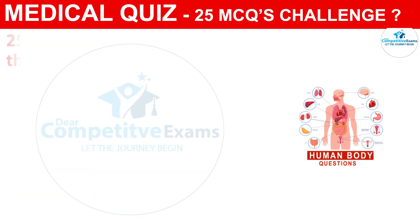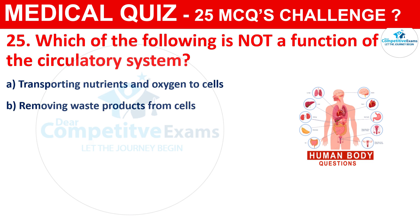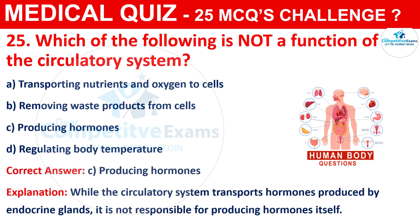Question 25: Which of the following is not a function of the circulatory system? The options are Transporting nutrients and oxygen to cells, Removing waste products from cells, Producing hormones, or Regulating body temperature. The correct answer is C, that is Producing hormones. While the circulatory system transports hormones produced by endocrine glands, it is not responsible for producing hormones itself.